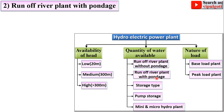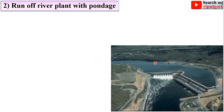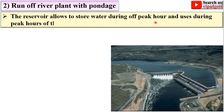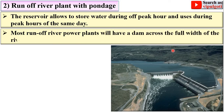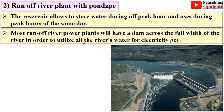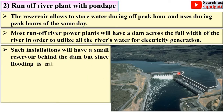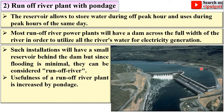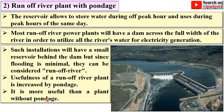The second type is the runoff river plant with pondage, where a small construction allows water to be stored in the pondage. The reservoir allows storing water during off-peak hours and using it during peak hours of the same day. Most runoff river plants have a dam across the full width of the river to utilize all the river's water. Since flooding is minimal they are still considered runoff river plants. The usefulness is increased by pondage, making it more useful than a plant without pondage.